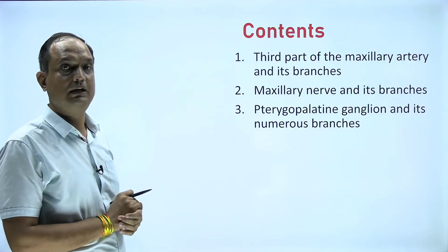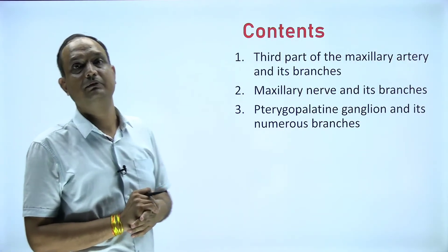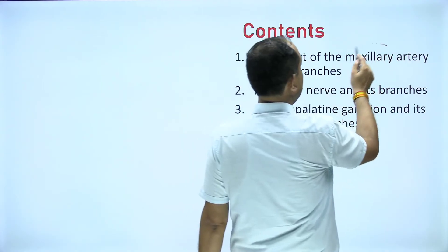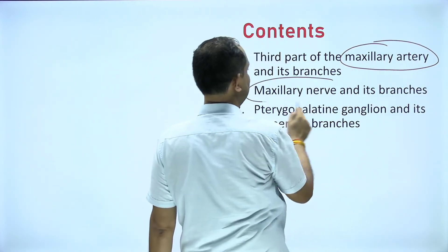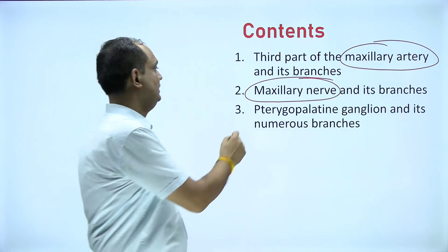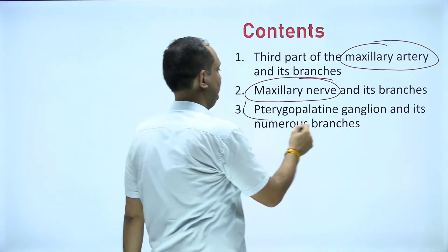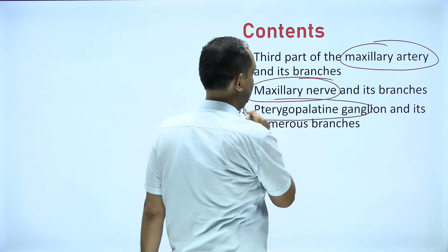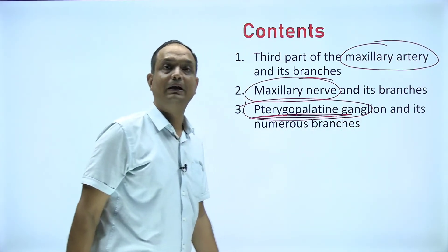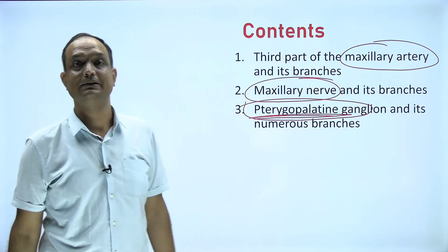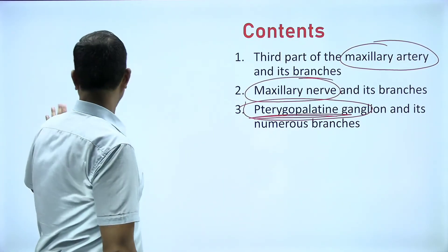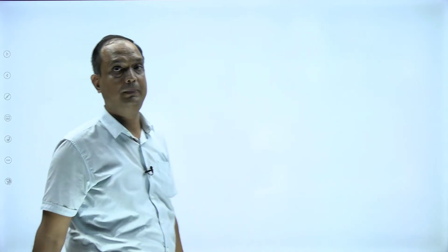The contents of the pterygopalatine fossa include the third part of the maxillary artery. The maxillary nerve enters through the foramen rotundum. There is also a very important ganglion — the pterygopalatine ganglion, which is a parasympathetic ganglion.